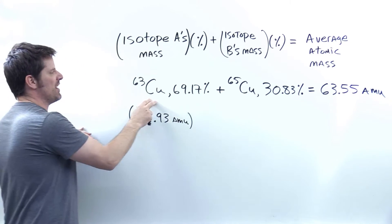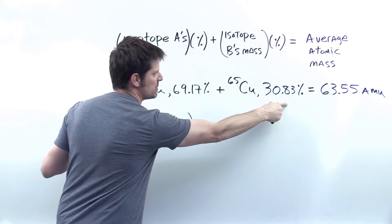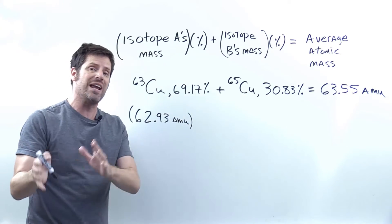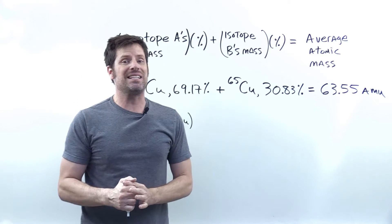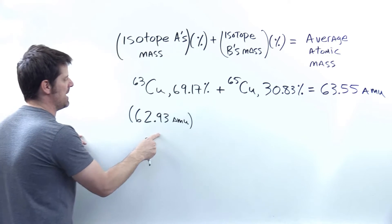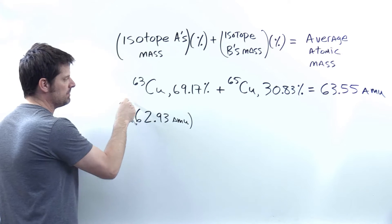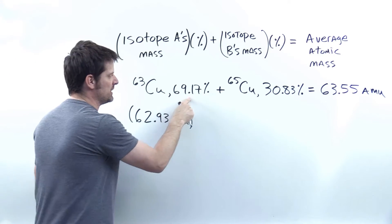So in this problem, we've got two different isotopes, and I've written down the percentages right there, and then it tells us that the weighted average of copper is this number right here. Now in the problem, it tells us a specific mass in AMUs for copper 63. I'm going to multiply that by the percentage. However,